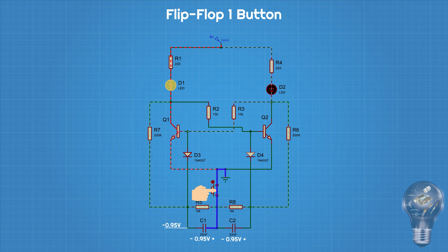When the button is pressed, the positive terminal of the capacitor is connected to ground. Therefore, the negative terminal of the capacitor will have a voltage of minus 0.95 volts. At this moment, the current that originally went into the base of transistor Q1 will instead go through the diode and to the negative terminal of the capacitor.